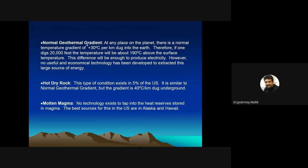At any place on the planet, the normal geothermal gradient is around 30°C per kilometer. Therefore, if one digs 20,000 feet, the temperature will be 190°C above the surface temperature. This difference would be enough to produce electricity, but digging 20,000 feet is not economically viable.